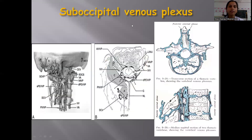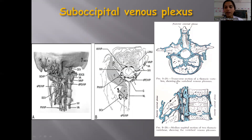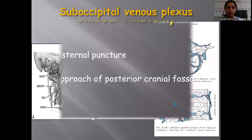Now coming to the suboccipital venous plexus: there is a plexus of veins present in the suboccipital triangle, and finally it drains into the internal vertebral venous plexus.